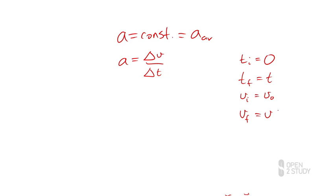We can now write our equation for acceleration as our change in velocity — that is our final minus our initial — divided by our change in time, our final minus 0.